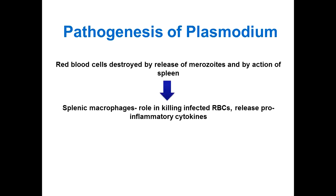Today we are going to start with pathogenesis of plasmodium. If you remember the asexual life cycle in humans, there was an erythrocytic phase where the red blood cells are destroyed by the release of merozoites and also by the action of spleen. The spleen would first sequester the infected RBCs and then lyse them. These splenic macrophages have a central role in phagocytosing infected RBCs, which are killed, and there is release of certain pro-inflammatory cytokines.